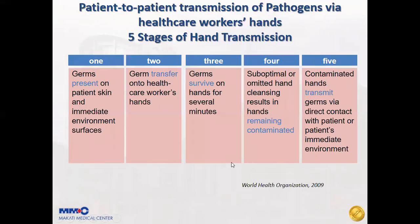Patient-to-patient transmission of pathogens via healthcare worker hands requires five sequential steps. If you touch a patient or their surroundings, germs are transferred to your hands. The germs can survive on your hands, and if you fail to perform hand hygiene and touch another patient, the germs will be transferred to that patient. Hand hygiene is important to break this chain of germ transmission.